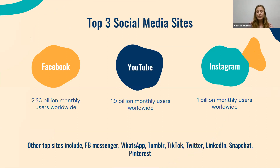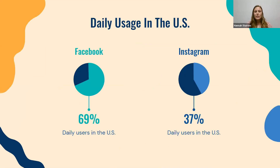Facebook has 2.23 billion users monthly, YouTube has 1.9 billion users monthly, and Instagram has 1 billion. There's a huge platform here and a ton of people are using it. Some other top sites are Facebook Messenger, WhatsApp, Tumblr, TikTok, Twitter, LinkedIn, Snapchat, and Pinterest. In the U.S., 69% of people who have a Facebook account check it daily, and 37% of people who have an Instagram account check it daily — lots of ways to help promote your program.